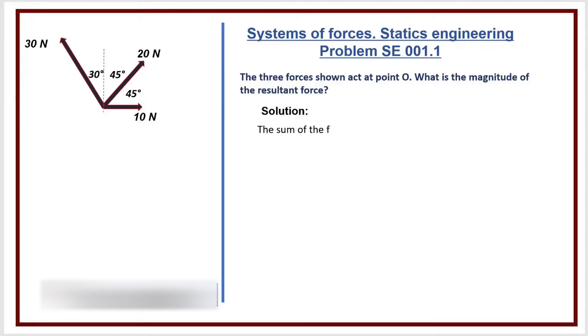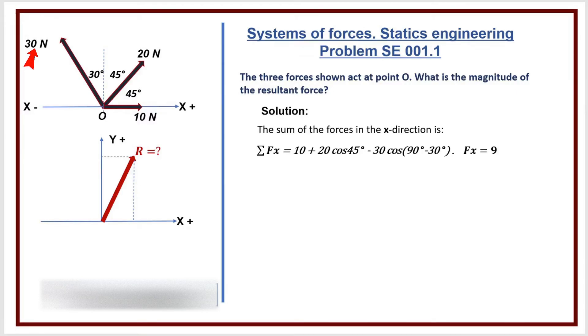The sum of the forces in the x-direction is: sum of Fx equals 10 plus 20 times cosine 45 degrees minus 30 times cosine 90 minus 30 degrees. Fx equals 9.14 Newtons.